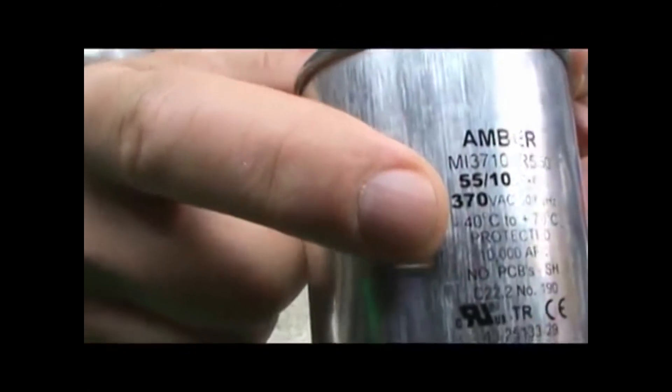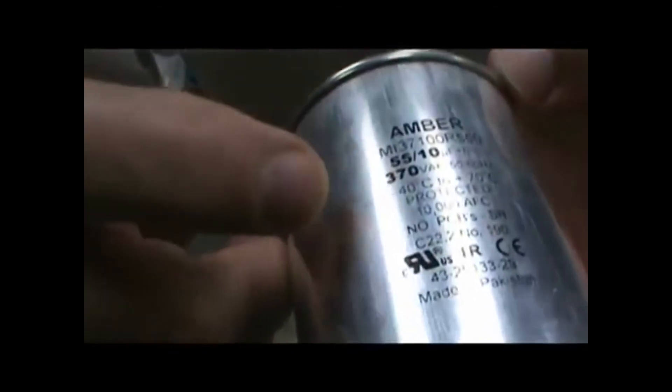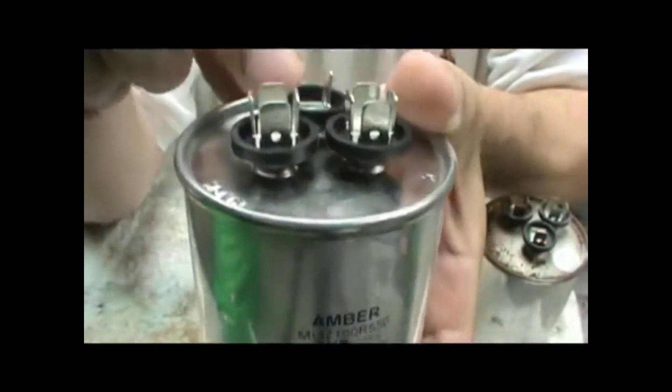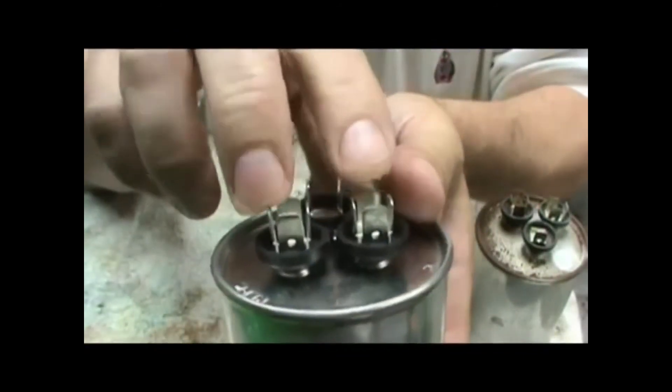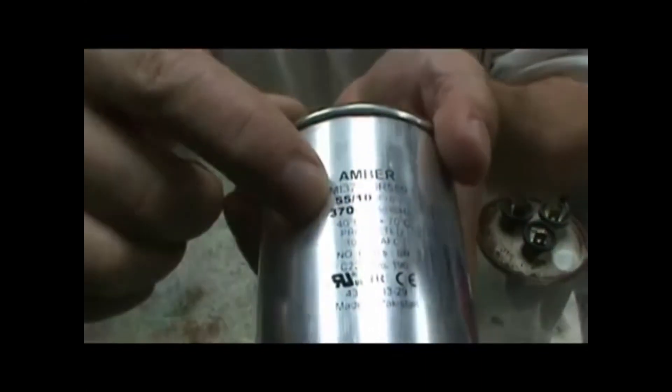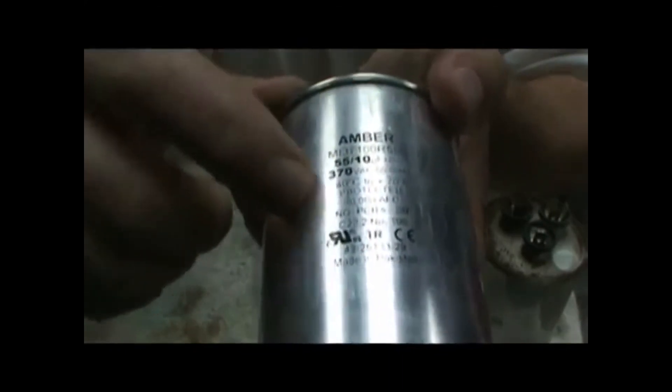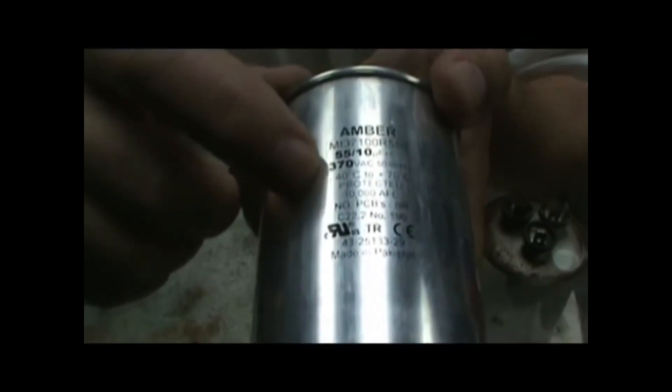Also, you need to know the voltage. In this case, it's 370. And this one is 55 and 10. So 55 and 10. When there's two numbers, it's a dual. When there's one number, it's just a single, and it just has two connections. So the 55 is going to be for the compressor, and the 10 is going to be for the fan. So you want to watch that voltage. Could be 420 or 370—those are your two choices.